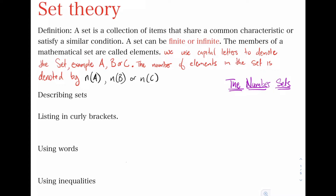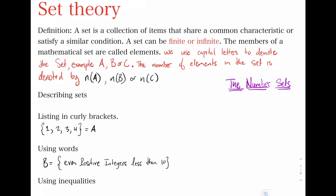When describing sets, we have three different ways. First, we could list elements in curly braces — for example, {1, 2, 3, 4}, and we could call this set A. Second, we could use words — for example, set B is equal to even positive integers less than 10.